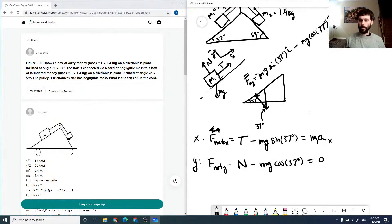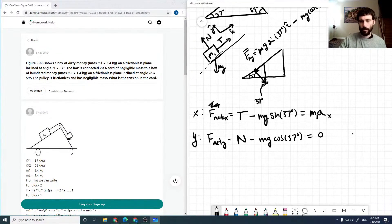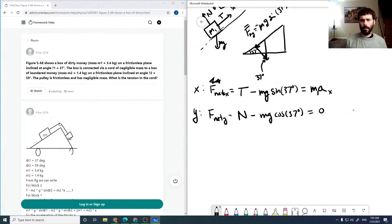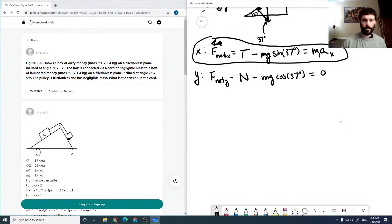If I look in the y direction, then I would find that our f net y is just the normal minus the mg cosine of 37. Since it's not moving in the y direction, that's going to equal zero. We could solve for our surface normal this way, but we don't need it because it's frictionless. But we will need this equation, and we can see that we have one equation but two unknowns.